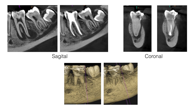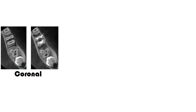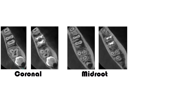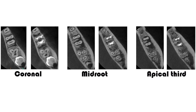This slide shows sagittal slices of the before and after views, coronal slices, as well as a 3D reconstructed view, clearly demonstrating good healing. In the 3D reconstructed view, you can also clearly see that the buccal bone plate is regenerating. A comparison between before and after views in the axial direction at different levels — coronal slice, mid-root slice, and a slice in the apical third — clearly indicates good healing.